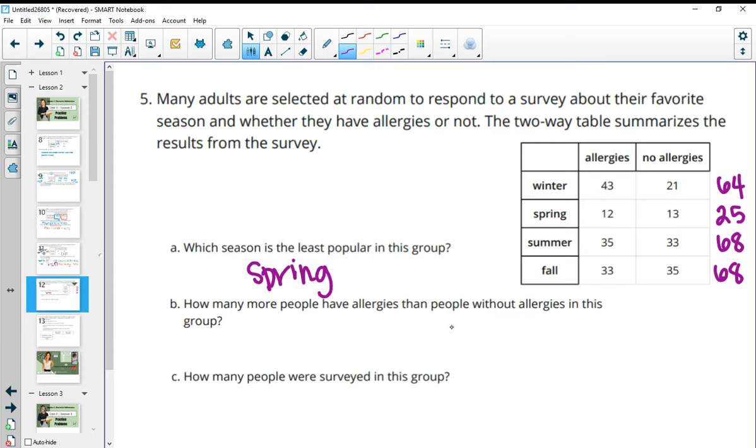How many more people have allergies than people without allergies in this group? So you're going to want to add the allergies. So add all of these up. So 43 plus 12 plus 35 plus 33 gives us 123. Then the same for no allergies. So you're going to add all of these numbers up and that gives us 102. And so how many more people have allergies? You can subtract those. So 123 minus 102 gives us 21 more people have allergies than not.